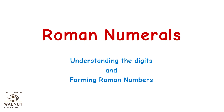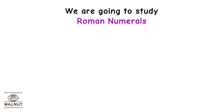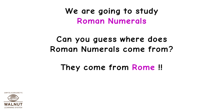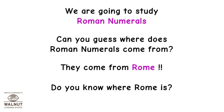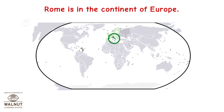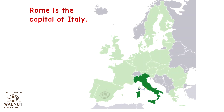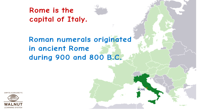Roman Numerals: understanding the digits and forming Roman numbers. We are going to study Roman numerals. Can you guess where Roman numerals come from? They come from Rome. Rome is in the continent of Europe, and it is the capital of Italy. Roman numerals originated in ancient Rome during 900 and 800 BC.